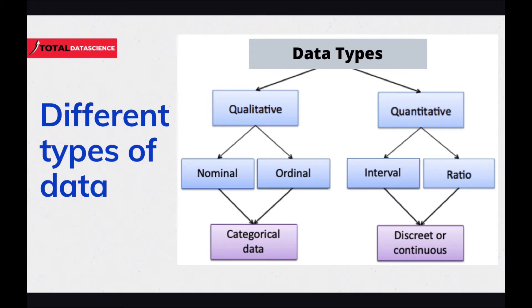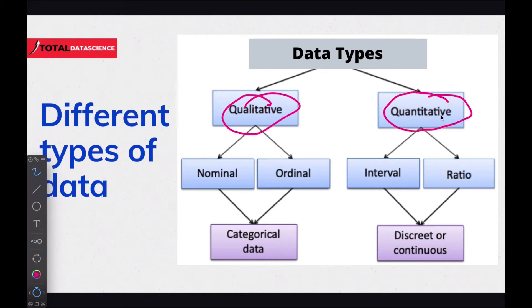Welcome back. In this video, we're going to consider the various data types. Since everything we do will circulate around data, we need to know the various data types we'll deal with as we progress. We have qualitative and quantitative. Under qualitative, we have nominal and ordinal. Under quantitative, we have interval and ratio. We also have categorical, discrete, and continuous.